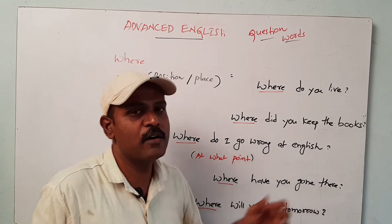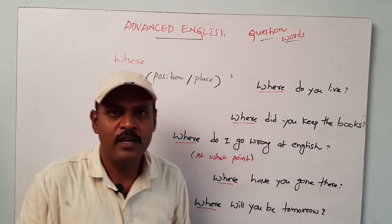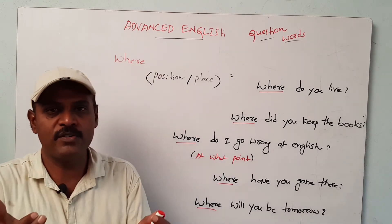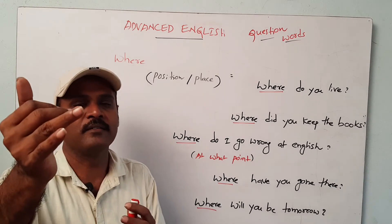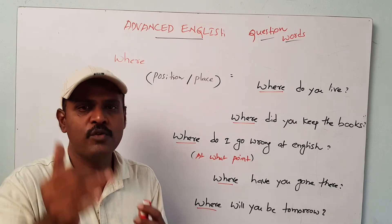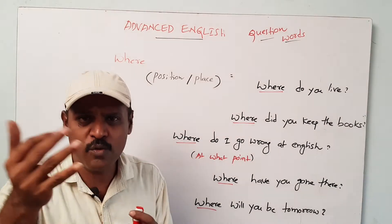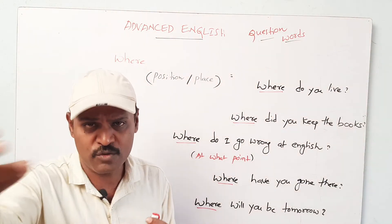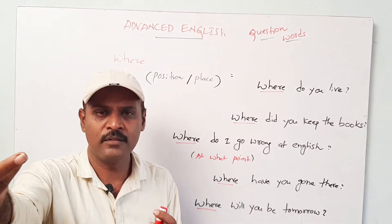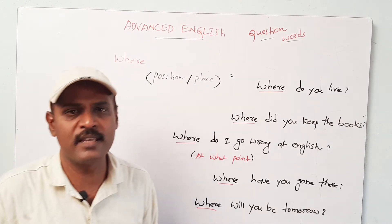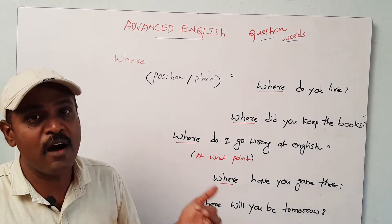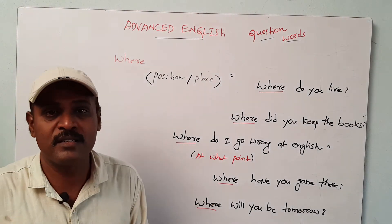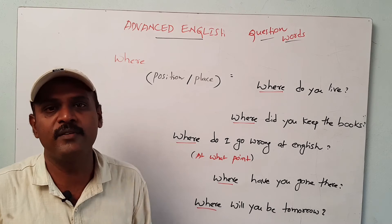'Where will you be tomorrow?' — it is simple future. Do you have any plan to go anywhere else tomorrow? So 'where' can be used in different contexts, depending on different situations.